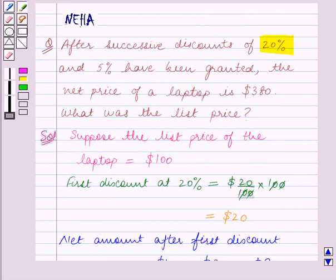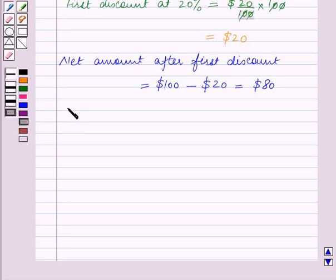Also, it is given that the second discount is of 5%. So second discount at 5% is equal to 5 upon 100 into the net amount after first discount, which is $80.